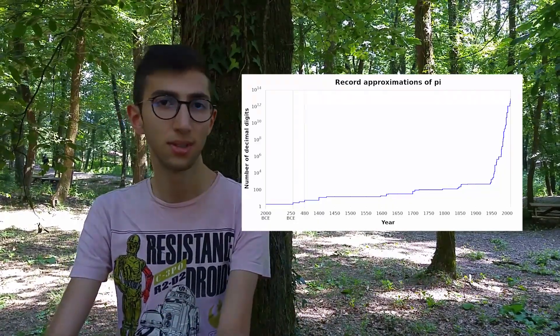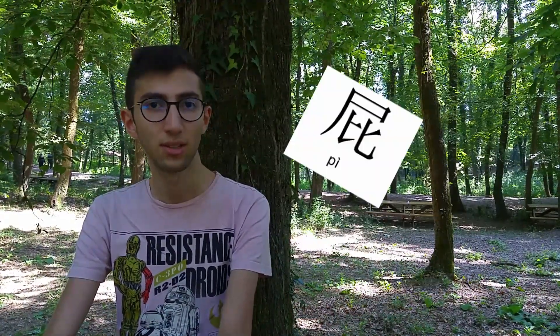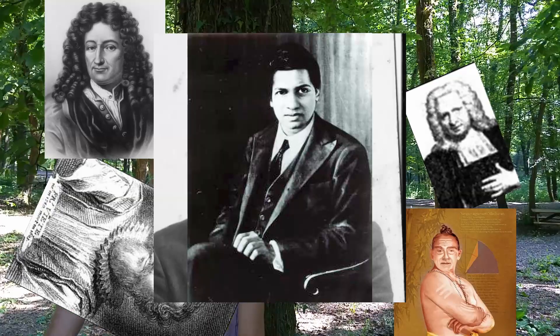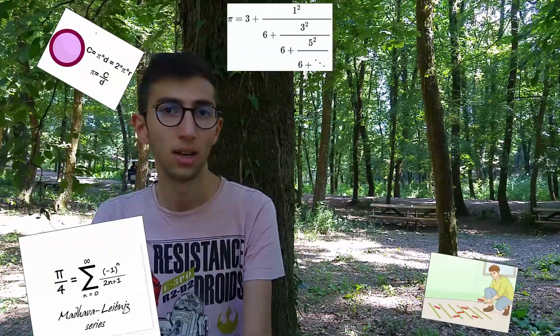The story started with the ancient Babylonians and Chinese discovering the first decimals. It continued with Archimedes and many more scientists working on the topic. Many more methods were discovered during this approximation.